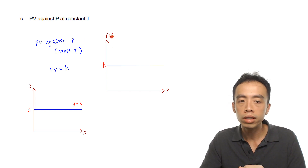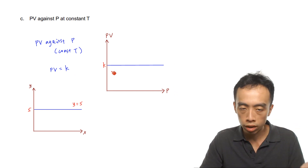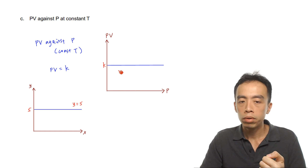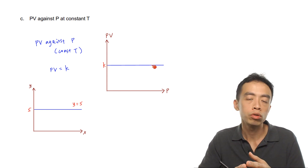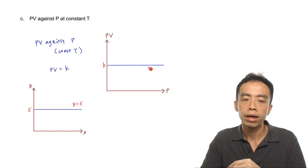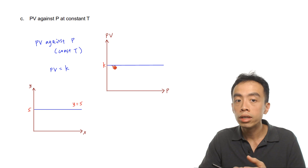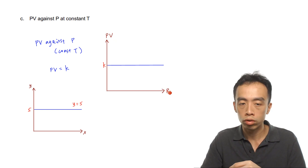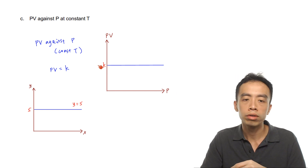Translating this to a PV against pressure graph: PV is constant means whatever the value of P, PV always equals k. So it is a horizontal line cutting the PV-axis at k. Similarly, a graph of PV against volume would also be a horizontal line cutting the y-axis at k.